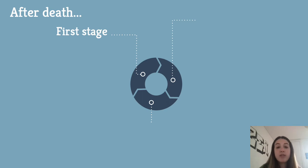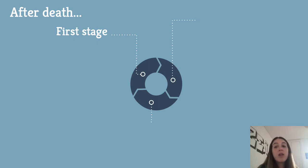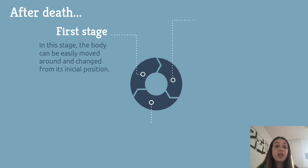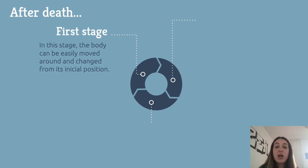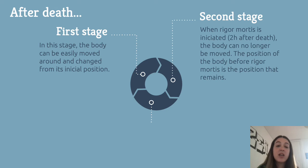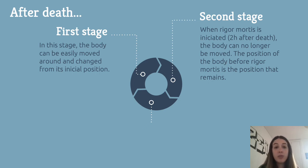When we enter the stage of rigor mortis, it is well known that immediately after death the body enters a stage of relaxation, which can be referred to as the first stage of rigor mortis. In this position the body can be easily moved around and changed from its initial position. Then we have the second stage, which is when rigor mortis is initiated, normally two hours after death. Here the body can no longer be moved, so the position of the body before rigor mortis is the position that remains.